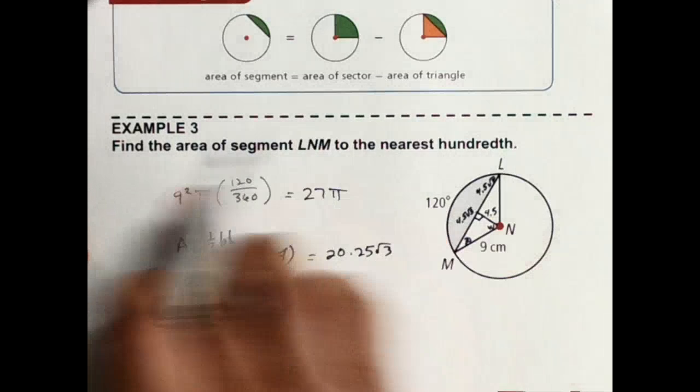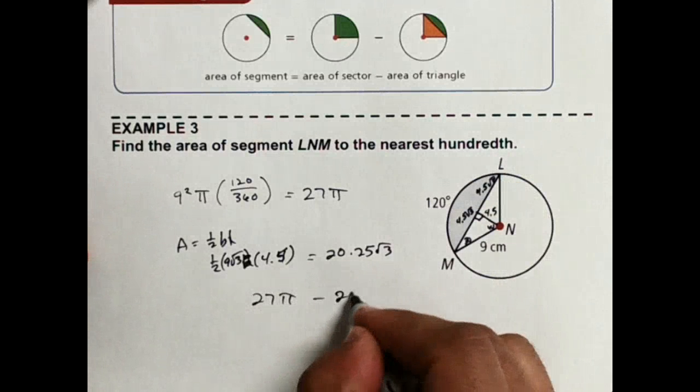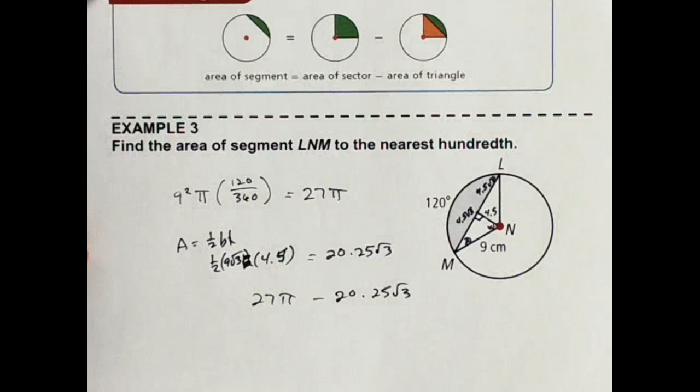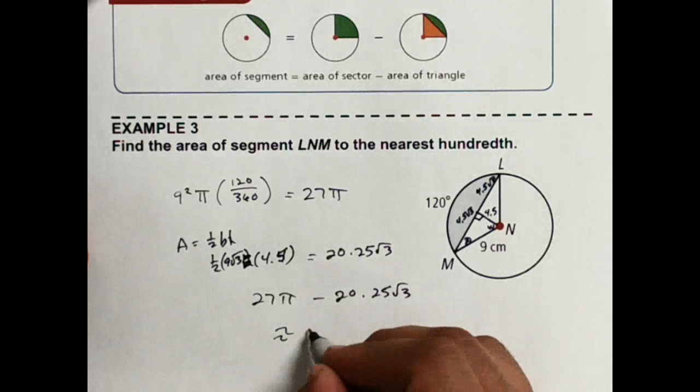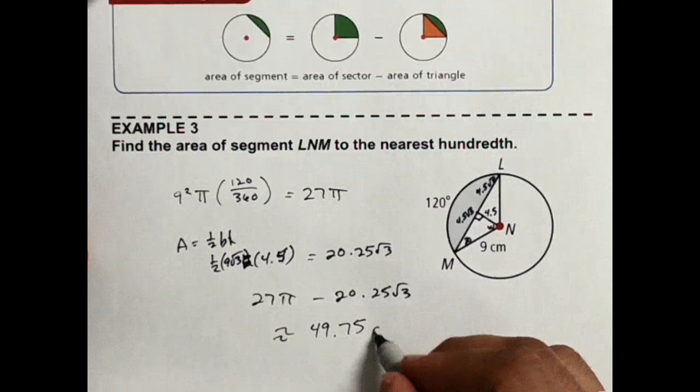So area of this segment, this gray area, is going to be 27 pi minus 20.25 square roots of 3. And let's see, in the calculator, that comes out to be about 49.75 centimeters squared.